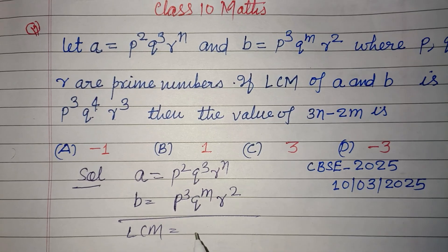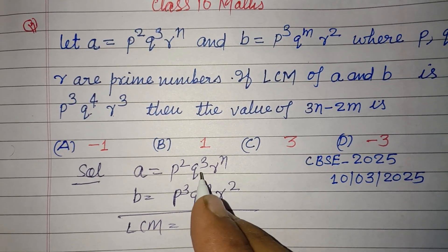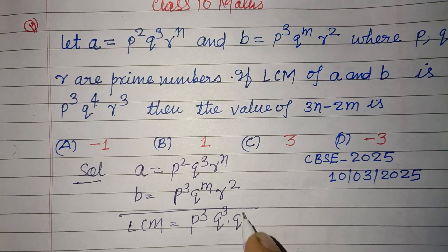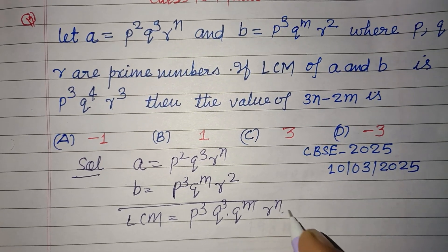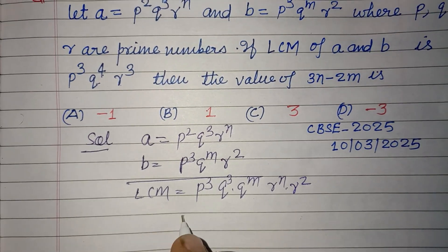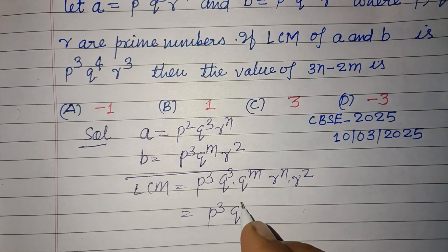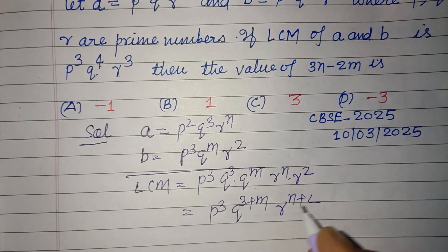So LCM will be P cubed Q cubed into Q to the power m, R to the power n into R to the power 2. And that is P cubed Q to the power 3 plus m, R to the power n plus 2.